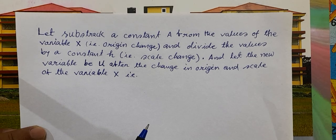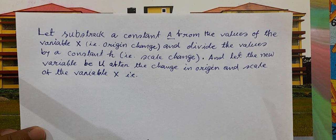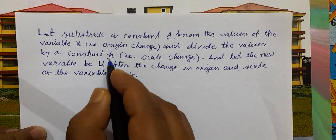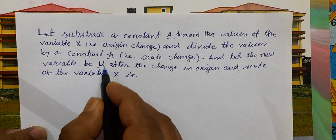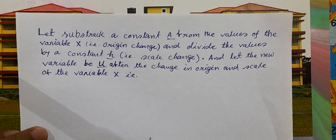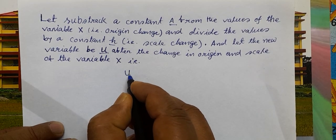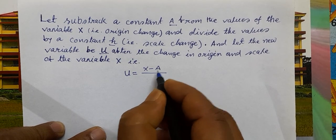Let us subtract a constant a from the values of the variable x — that is an origin change — and divide the values by a constant h — that is a scale change. Let the new variable be u after the change in origin and scale of x. That is, u equals (x minus a) divided by h.